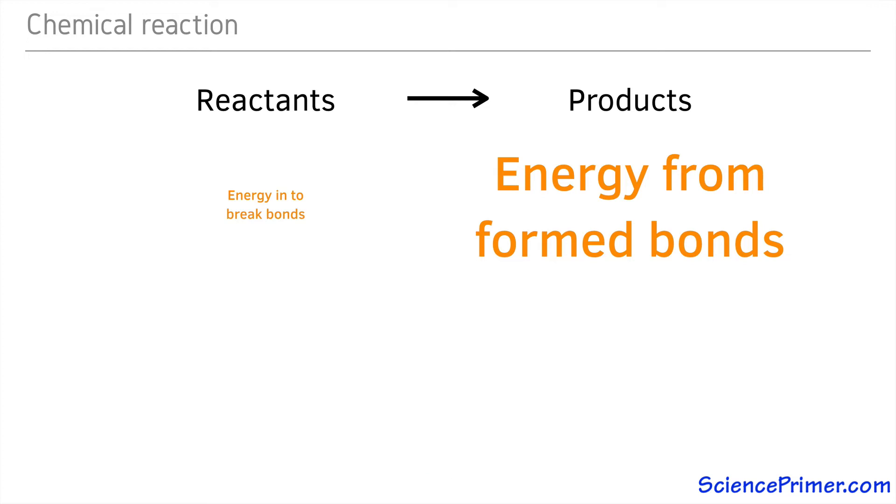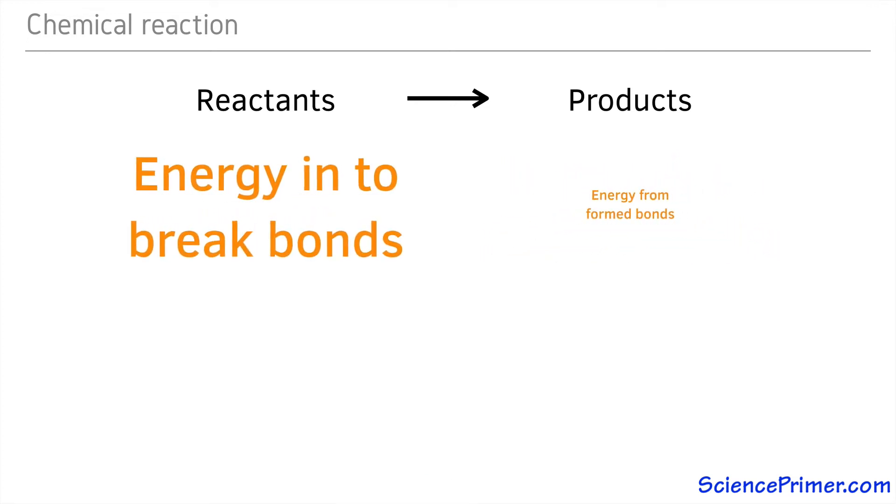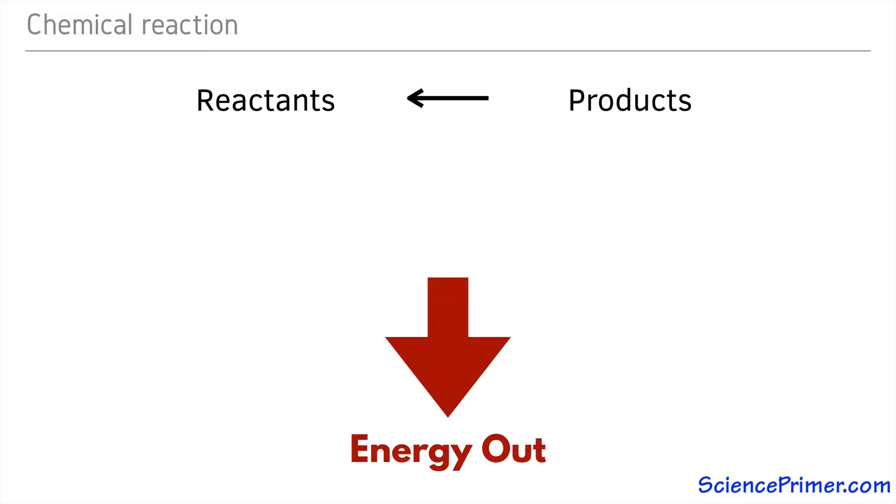If breaking the bonds in the reactants require more energy than is released when the bonds in the products form, the reaction requires energy to be added in order for it to proceed. But when the reaction is complete the energy added is stored in the bonds of the products. This energy can be recovered by running the reaction in reverse.